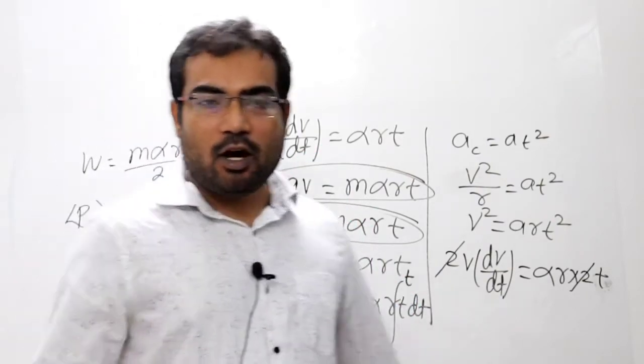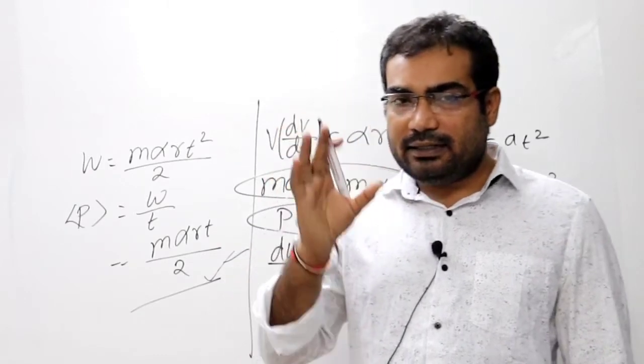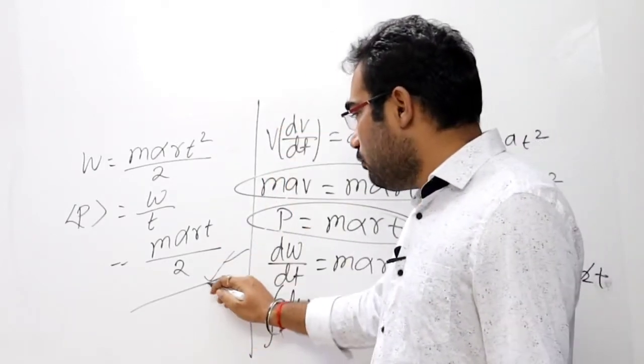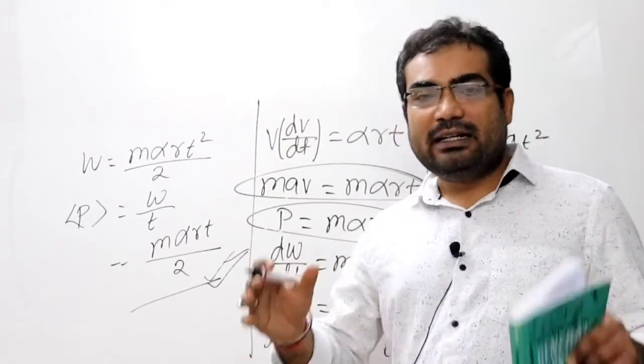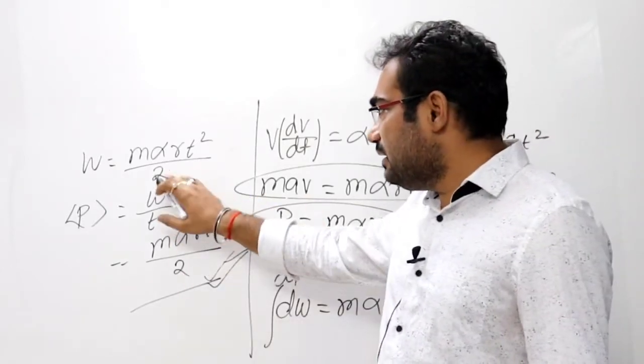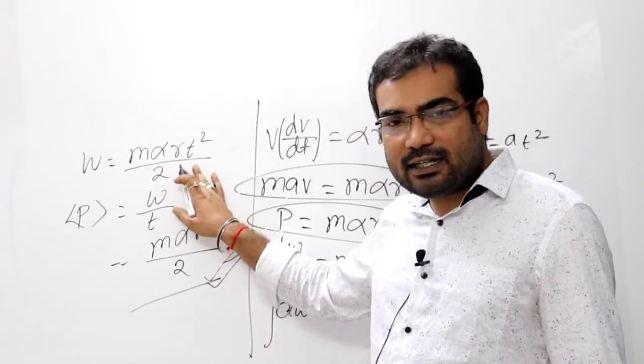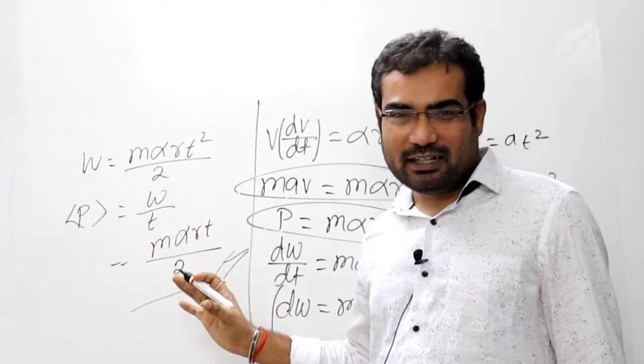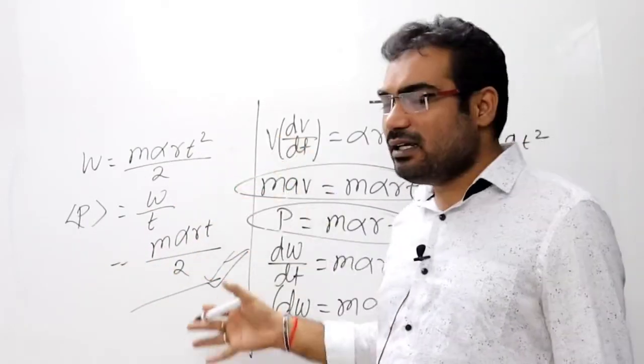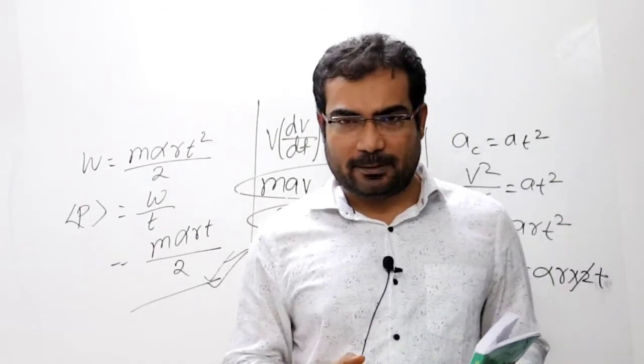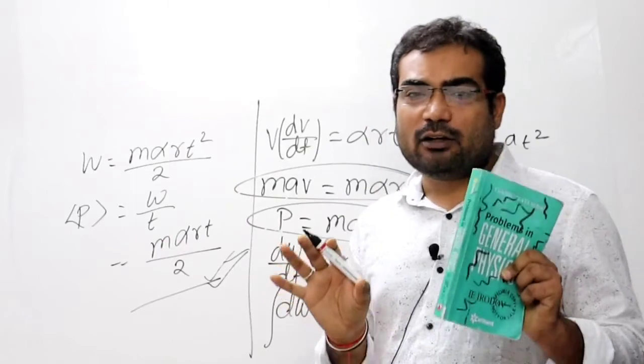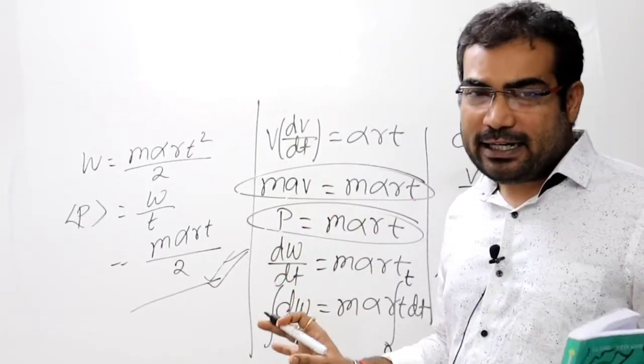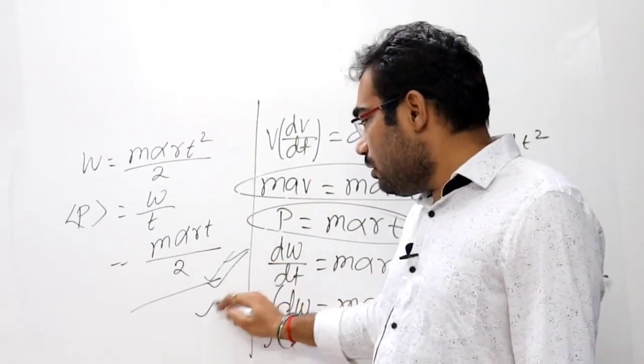Is question ke first part me nikalna tha, and second part me kya nikalna tha - T seconds me average power. Toh woh maine yaha pe calculate kar diya. T seconds me dW by dt karke, T time ke liye usko integrate kar diya. T time me jo work hoga woh calculate kar diya, time se divide kar diya, average power nikal liya. Isi tarike se is tarah ka question ko solve kiya jata hai. Thik hai, toh is tarike se concept seekhi. Question ko banane ke concept sabse zyada important. Thik hai, okay.